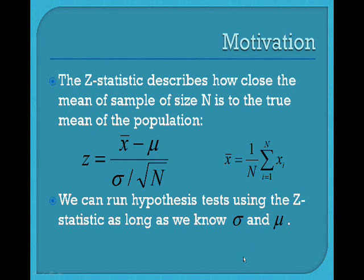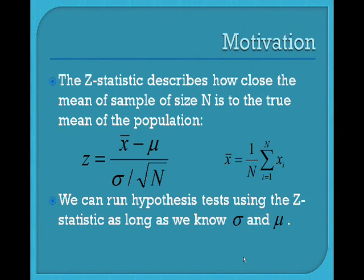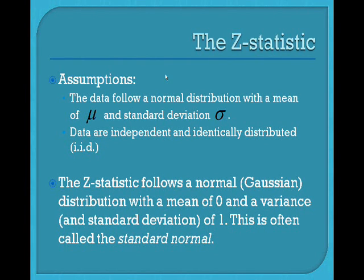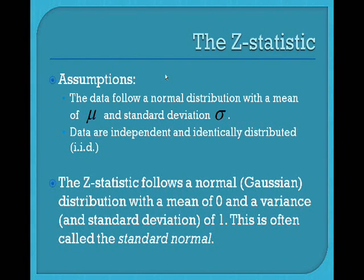So of course, when we're using these things, we assume that we know both sigma — the population standard deviation — as well as mu, the original population mean. We're also assuming our data follows a normal or Gaussian distribution. We know both mu and sigma, as well as we assume that our data is independent and identically distributed — iid — just meaning that our first data point has no correlation to our second data point, so that it's as if we're just picking a random sample every time.